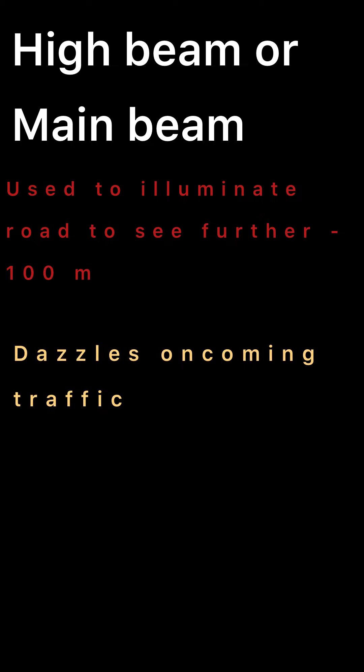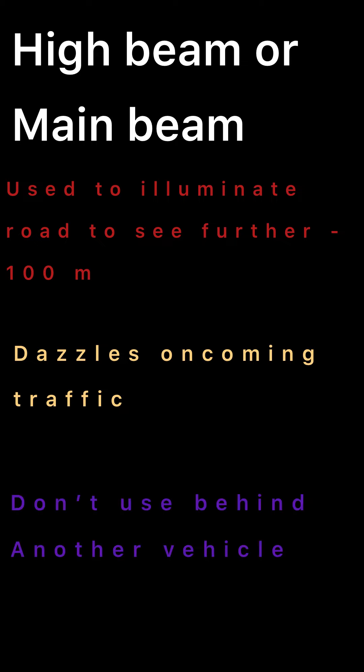Now let's look at main beam or high beam. This is used to illuminate beyond the range of your dipped headlights, which is 30 meters — so main beam illuminates around 100 meters. This is definitely not the preferred way because it dazzles oncoming traffic. It's always recommended to use dipped headlights at night, and you don't use main beam while behind another vehicle. This is how it appears on your dashboard.